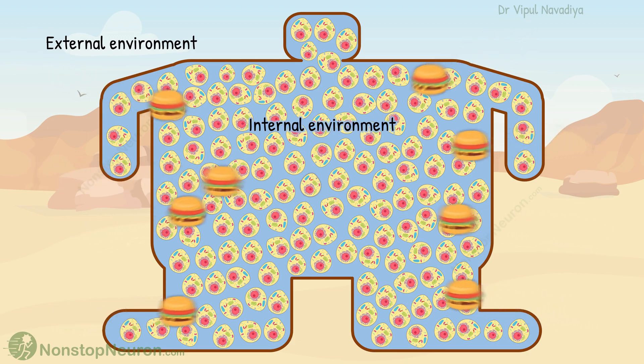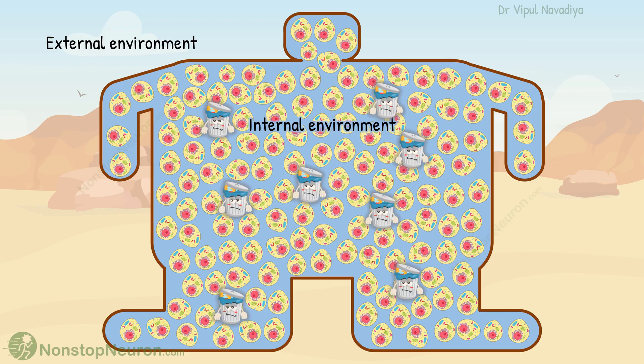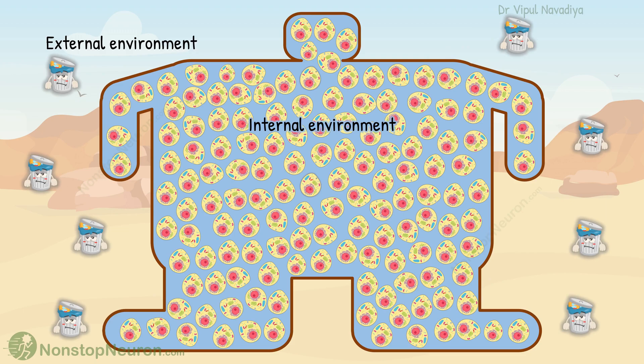The collective job of all the cells is to keep the internal environment suitable for life. For example, it should have enough nutrients so all the cells in the body can get them easily. And also, the cells release their waste products into this internal environment, so it needs to be cleaned from these waste products regularly. Similarly, there are so many things to be taken care of inside this home. This maintenance of the home is called homeostasis.